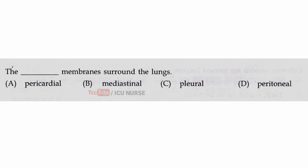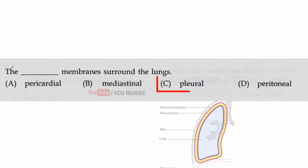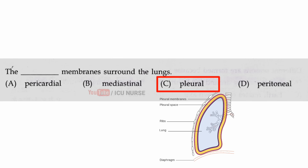The membranes surrounding the lungs are called — the correct answer is C — pleural membranes.